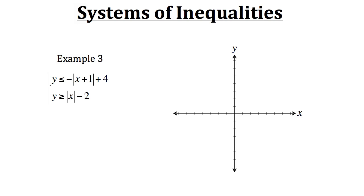Let's start by graphing the first inequality: y is less than or equal to negative absolute value of x plus 1, plus 4. The absolute value graph will look like this, and it's a solid line because any point along it is part of the solution — hence y is less than or equal to this expression. We also need to shade in the region indicated by the inequality. Since y can be less than or equal to this expression, we shade the region below the absolute value line.